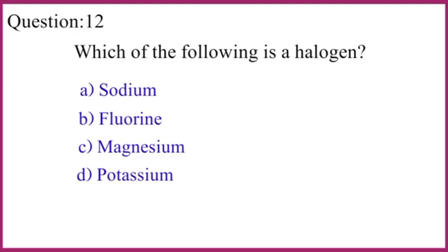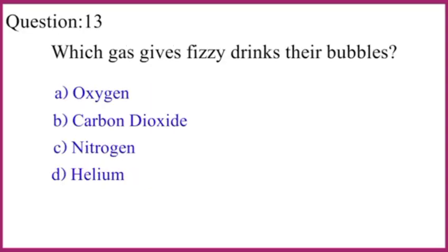Which of the following is a halogen? Fluorine, chlorine, bromine, iodine — the correct answer is fluorine. These four are called halogens. Which gas gives fizzy drinks their bubbles? The correct answer is carbon dioxide.